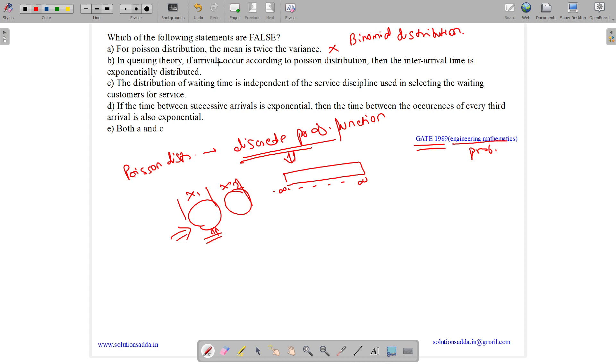Option B, in queuing theory, if arrival occurs according to Poisson distribution, then the inter-arrival time is exponentially distributed. This is true.